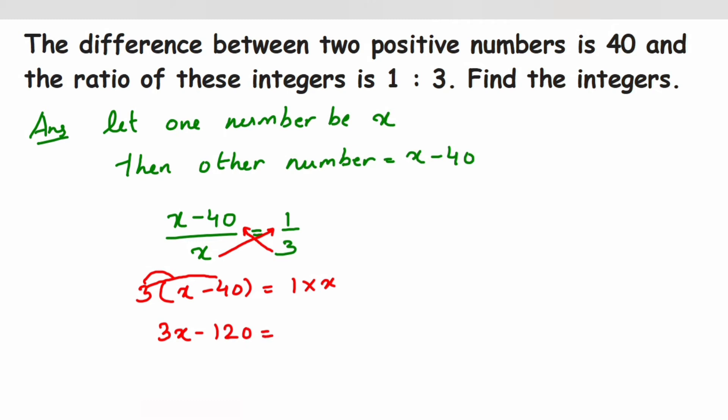From here we want the x value, so transpose x to this side and 120 to the right hand side. We'll get 3x minus x equals 120. When you transpose it becomes plus 120. From here we'll get 3x minus x is 2x.